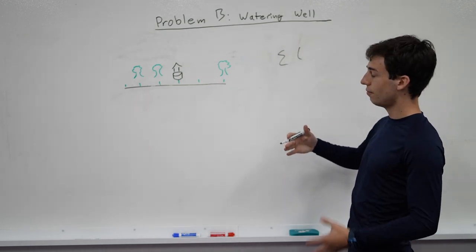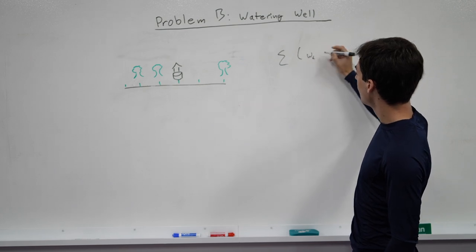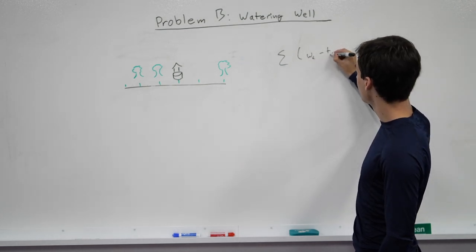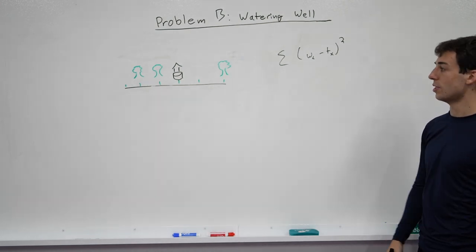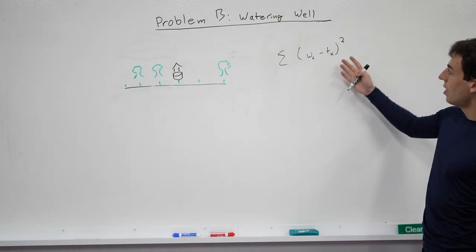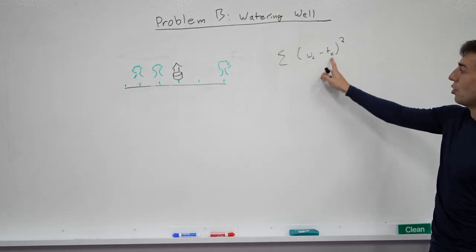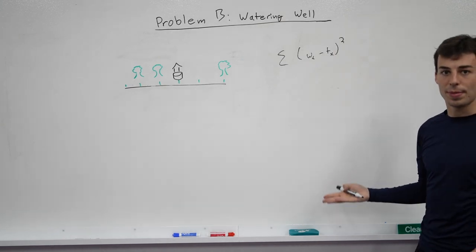But the thing we're trying to find the value of is the sum of the well x minus the tree x squared. We want to find this for all wells and all trees. And the important thing here is that we don't have to worry about the order of these two elements. It doesn't matter which one comes first because we're squaring it so it'll be positive no matter what.